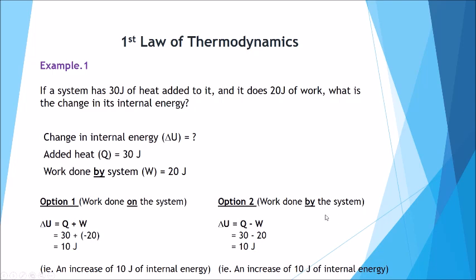Alternatively, from a physics perspective, our equation is delta U equals Q minus W. The heat added is 30 joules, and the work done by the system we're taking away is 20 joules, and that leaves us with a change of internal energy of 10 joules.